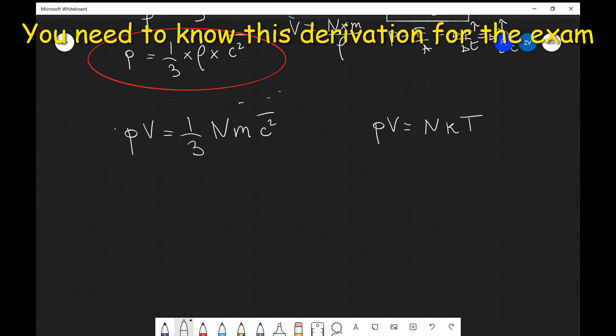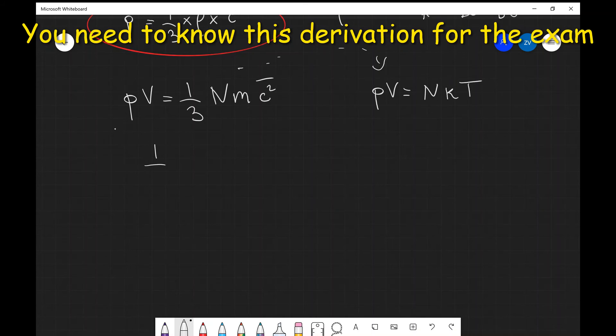Because if PV is equal to one-third Nmc̄², that means that this also has got to equal NKT. So in other words we can combine those two equations: one-third Nm times the mean square speed is going to equal NKT.